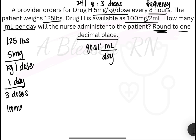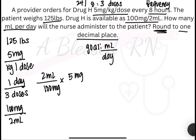And then our last puzzle piece is going to be 100 mg per 2 ml. And since this is asking us to find milliliters, I always start with what I am looking for. So I will flip this puzzle piece and put 2 ml on the top and 100 mg on the bottom.